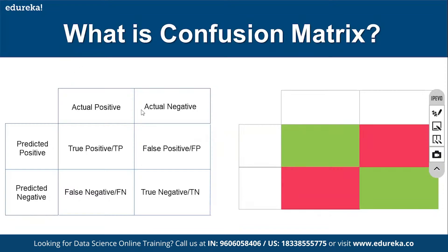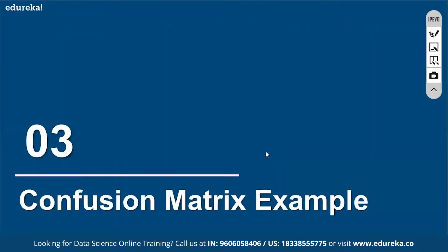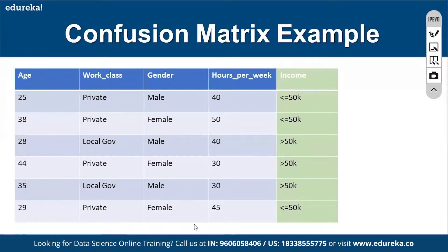Let's take an example. The target (dependent) variable could be whether a person's income is greater than 50K or less than 50K — yes or no. The dataset includes features like working experience, class, gender, and hours per week as the independent variables.